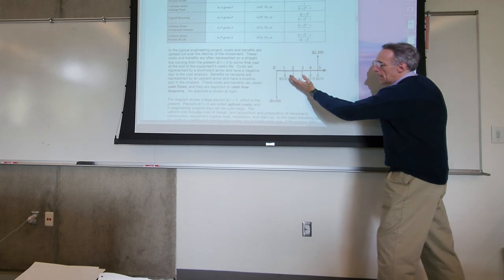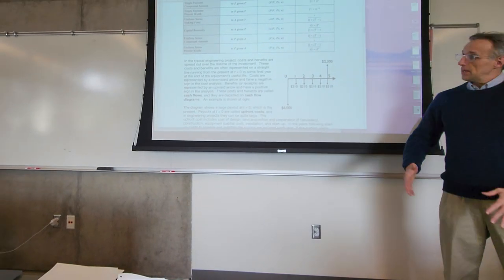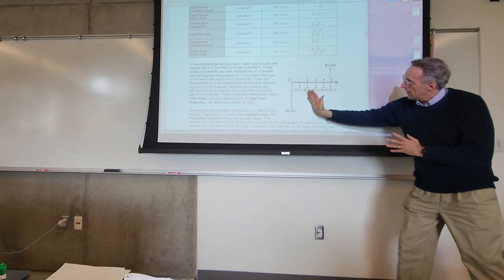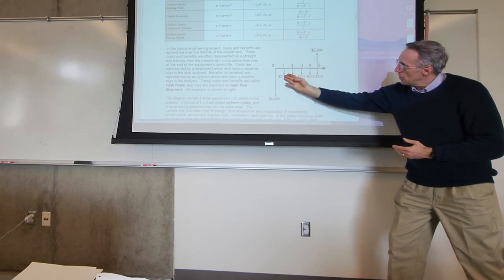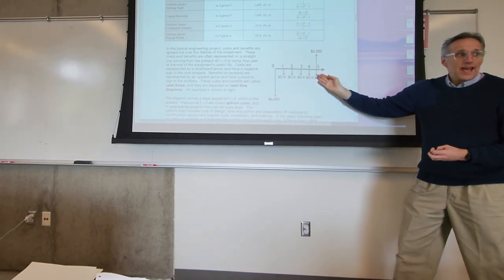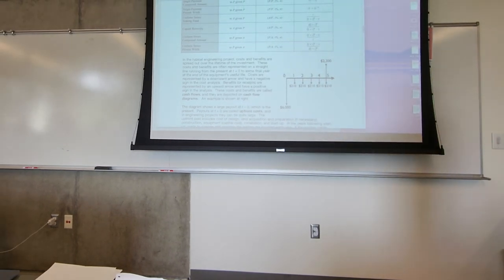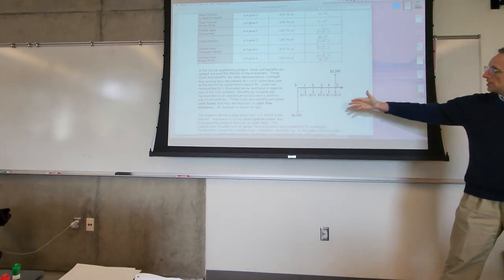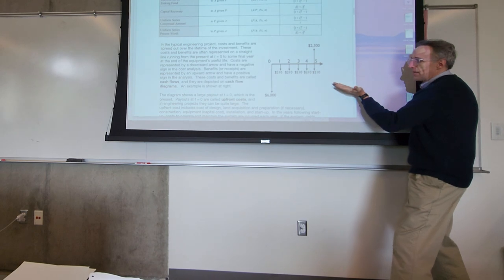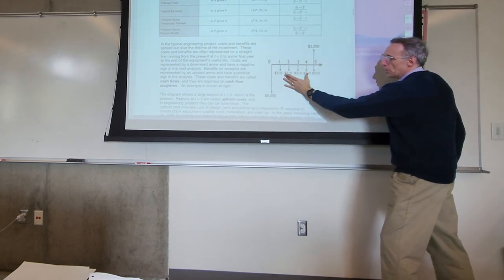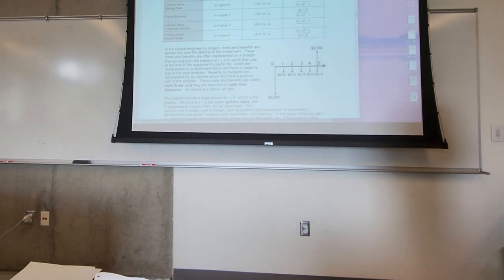Where it becomes more difficult is estimating operating and maintenance costs, costs of fuel, electricity, energy across the life of the project. The standard way to handle that is to work our costs out over time into a series of equal annual net cash flows. A downward arrow means that you're paying out — that's money leaving you. An upward arrow is money coming in, so it's income. It's relatively simple to take a series of equal annual payments and convert those to a present value, so you can add it to the initial cost and get a present value for your investment.